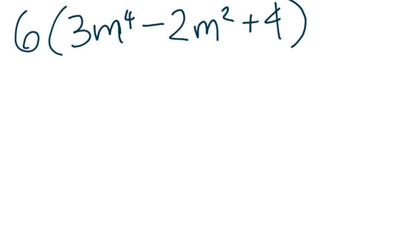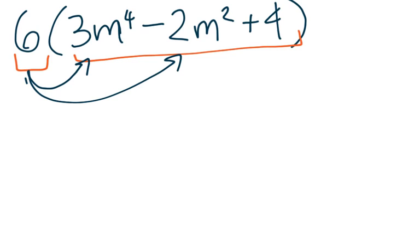If we are multiplying a polynomial by a constant, we're going to use the distributive property again. We will just distribute out 6 times each of the terms in the polynomial.